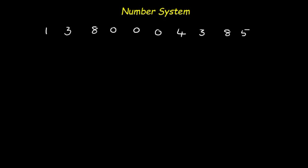Now I am going to teach you about the Indian system. How can we read the same number using the Indian system? Starting from the last digit as usual: ones, tens, hundreds, thousands, ten thousands, then lakhs, ten lakhs, crores, ten crores, and hundred crores.